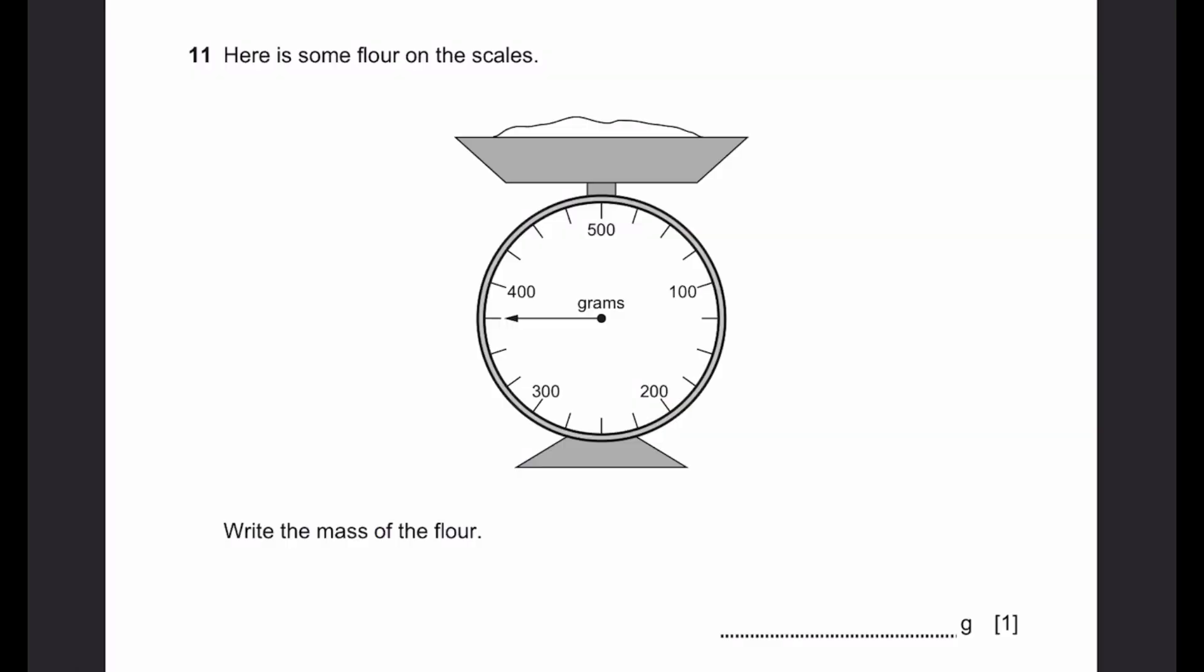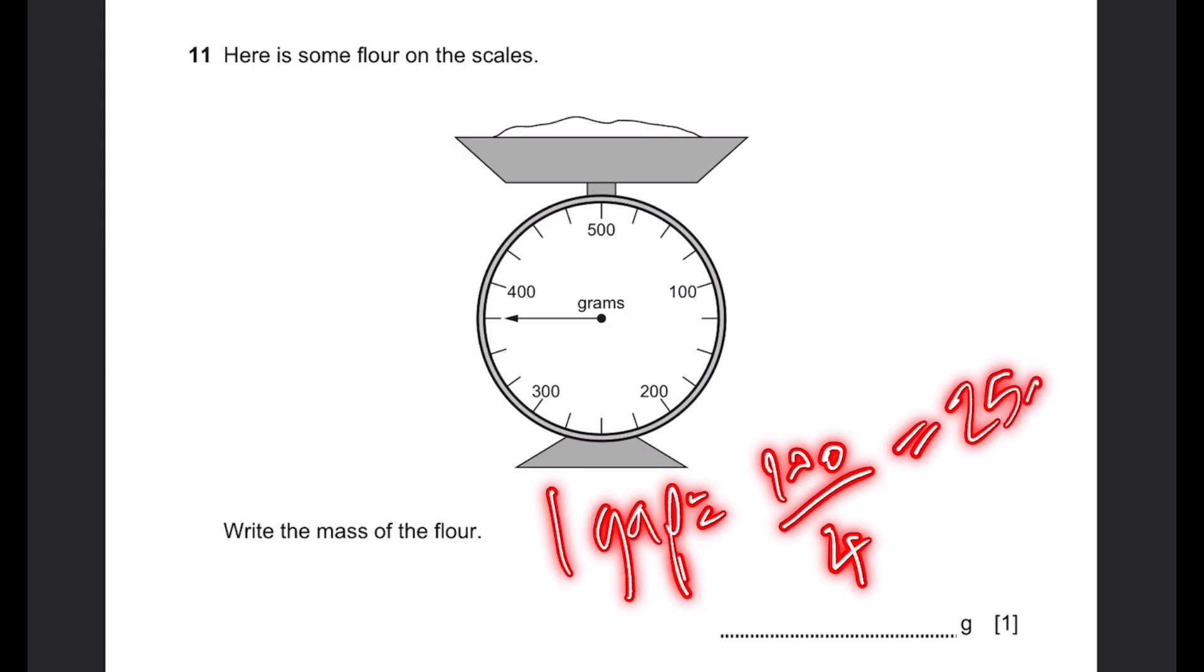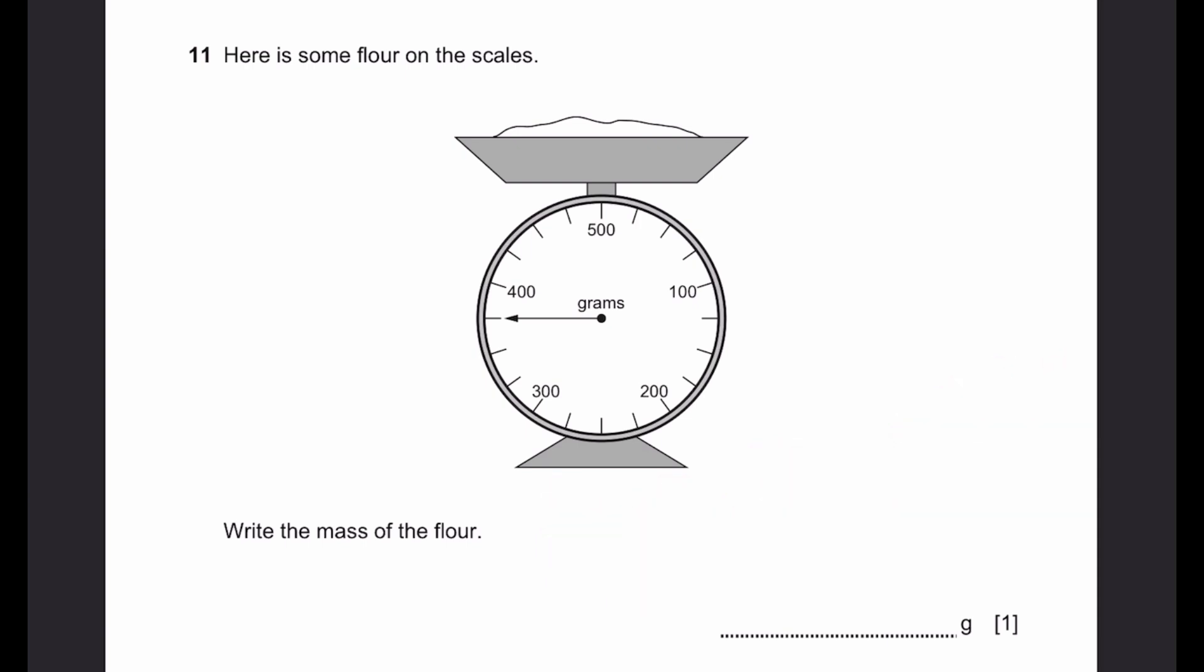Question 11. Here's some flour on the scales. Write the mass of the flour. So there are 1, 2, 3, 4 gaps between 100 and 200. That means 1 gap equals 100 which is the difference by 4, number of gaps, 25 grams. So 300 plus 1, 2, 3 gaps. So 300 plus 25 into 3, which is equal to 375 grams. That's the answer.